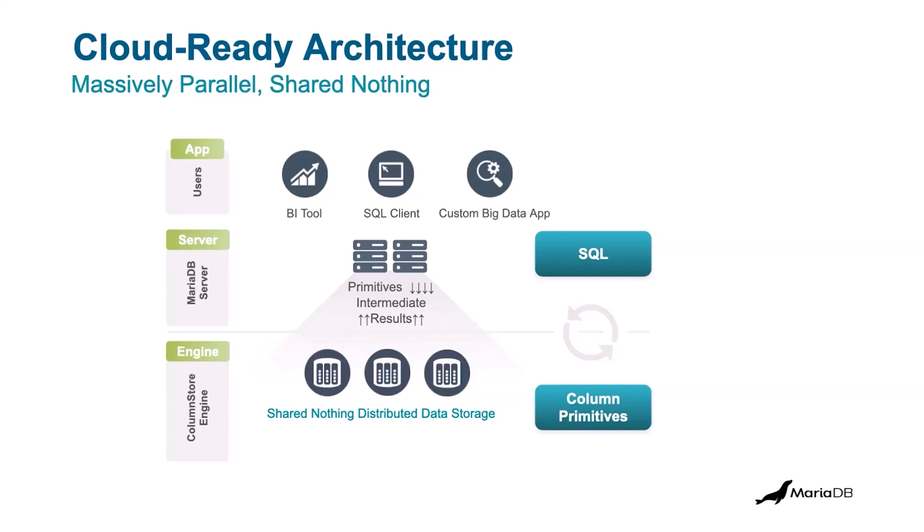That server could be pointing to other types of engines as well — transactional engines — which would be represented by horizontal lines instead of the vertical lines shown for ColumnStore.